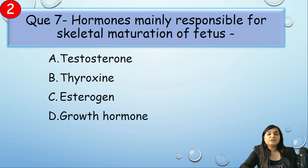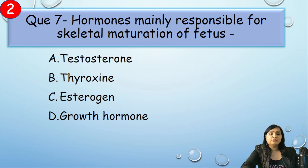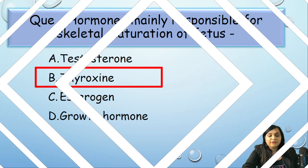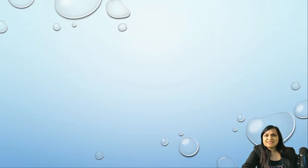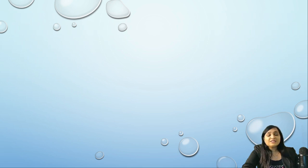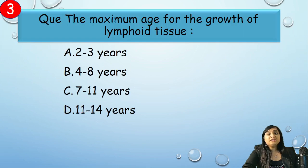The next question: which hormone is mainly responsible for skeletal maturation of the fetus — testosterone, thyroxine, estrogen, or growth hormone? Correct answer is option B, thyroxine. Thyroxine is responsible for skeletal maturation; its deficiency will retard skeletal growth, but it does not have any effect on the linear growth of the fetus.